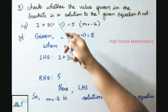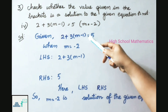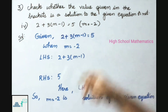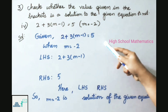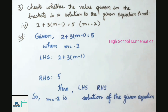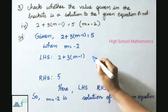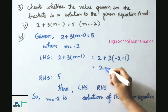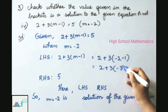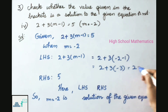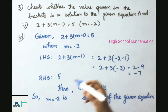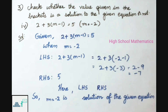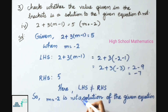Fourth sum: checking m = −2 in the given equation. LHS = 2 + 3(−2) − 1 ... simplifying gives 2 − 9 = −7. RHS = 5. LHS and RHS are not equal, so m = −2 is not a solution of the given equation.